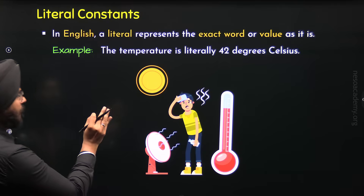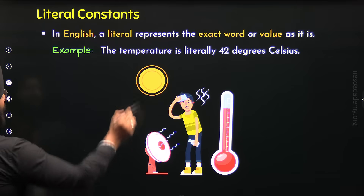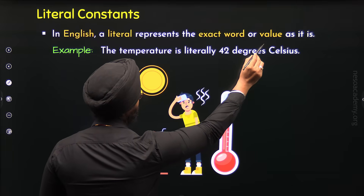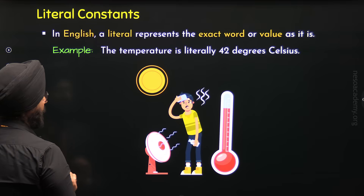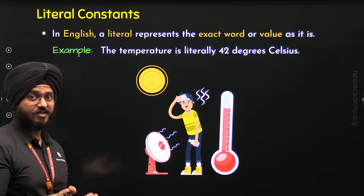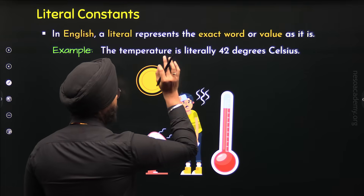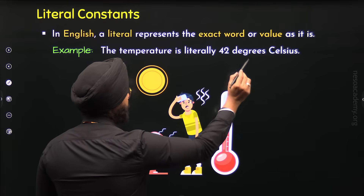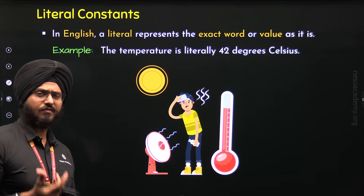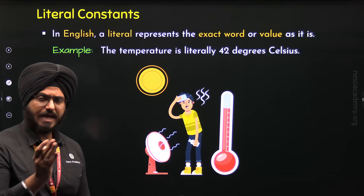I hope the meaning of literal is making sense to you. A literal represents the exact word or value. In this example, literal is 42 — this is the exact value, representing the exact temperature right now in degrees Celsius. With this we learned what is the meaning of literal in English.